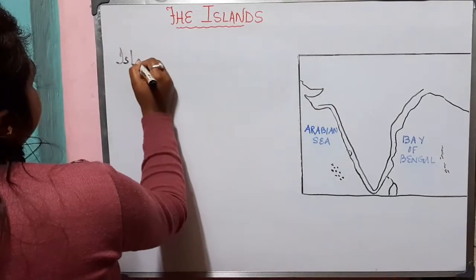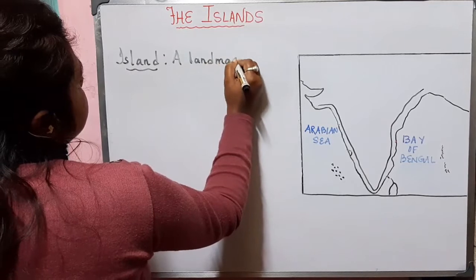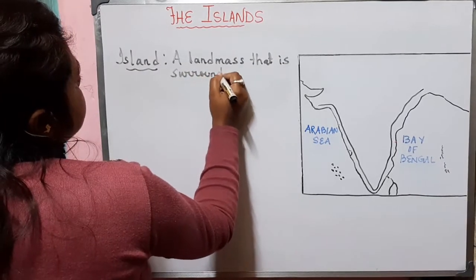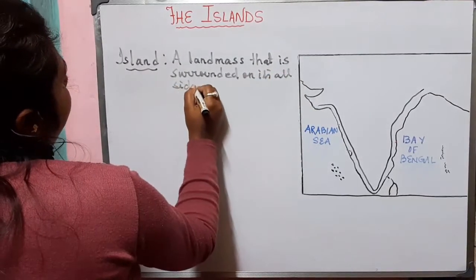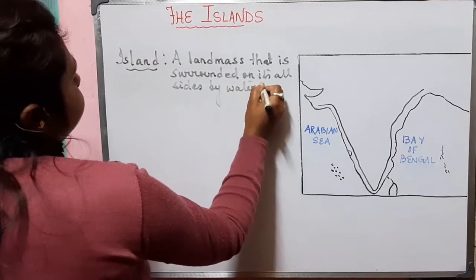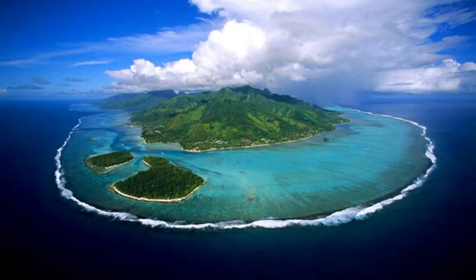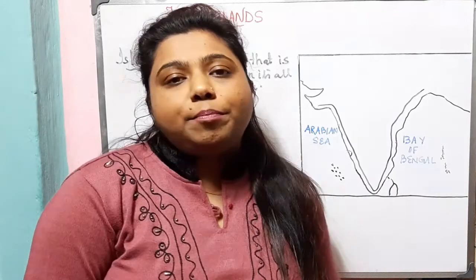First, let us know what do you mean by an island. What is an island? A landmass that is surrounded on all its sides by water is called an island. There are so many islands in the Arabian Sea and the Bay of Bengal.